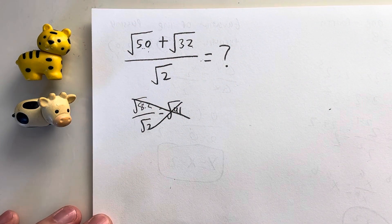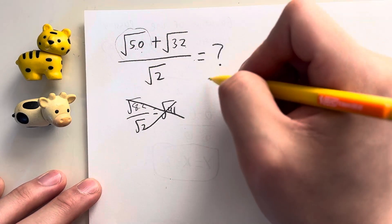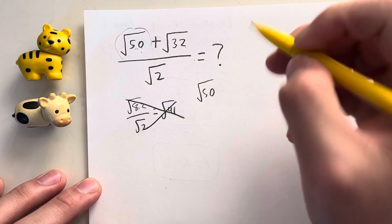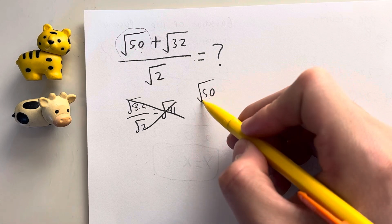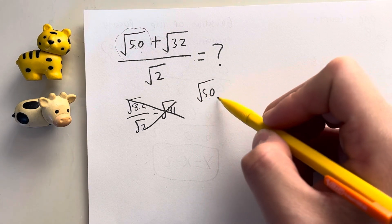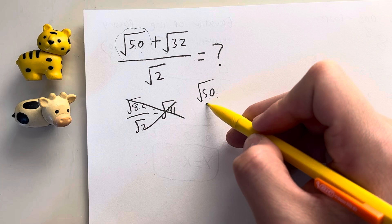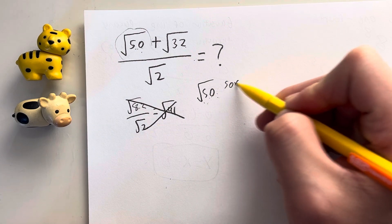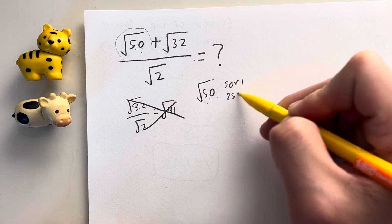So this is how you're actually supposed to approach this. Let's try to simplify the square root of 50 first. So the square root of 50, what are some factors of 50 that are perfect squares? That's the most important part. We have to find factors that are perfect squares. So I know that 50 is equal to 50 times 1, that's also equal to 25 times 2.